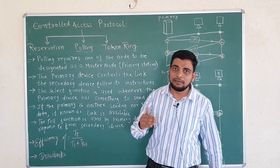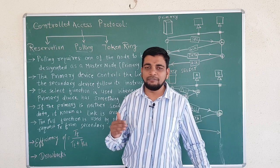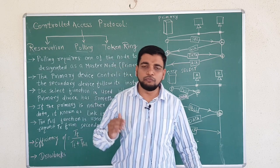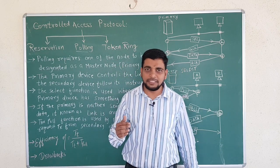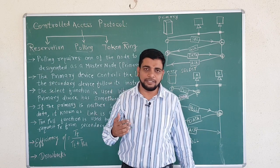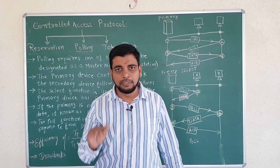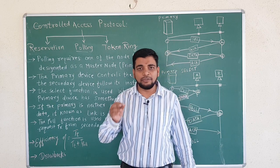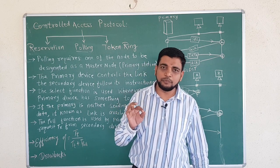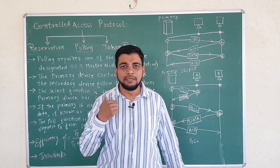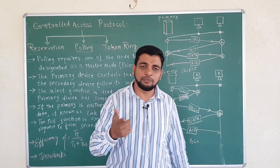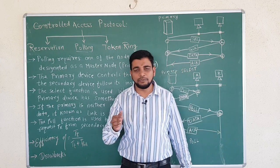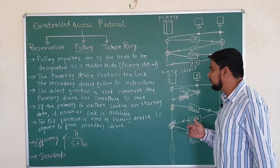How is collision avoided in polling? By controlling with the help of a master node. The master node controls and all secondary nodes follow it. For example, in this online class, I am the master node and you all are secondary nodes. If I ask a particular student a question, only that student answers — others cannot answer simultaneously. Only the one who is given authority by the controller can respond.